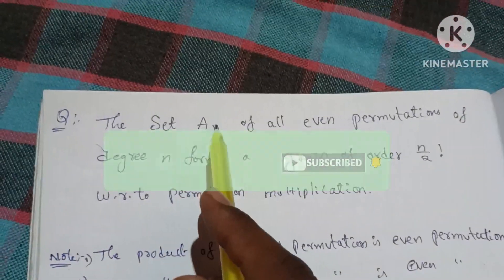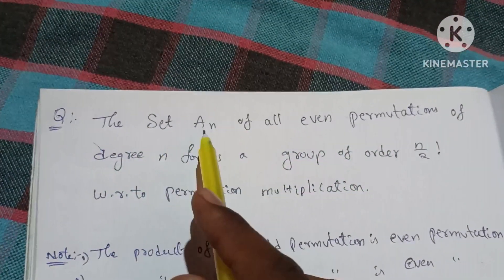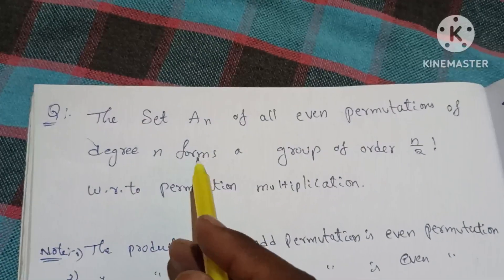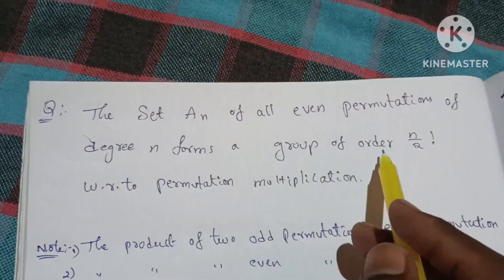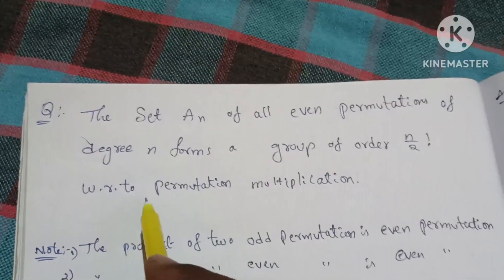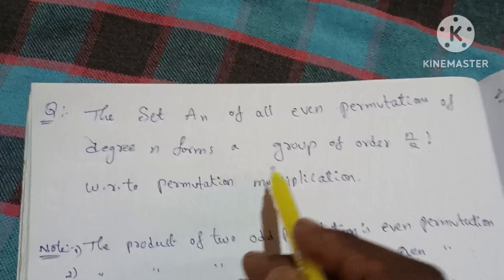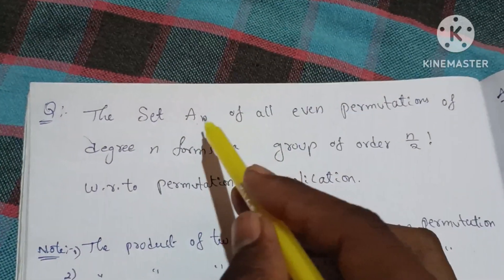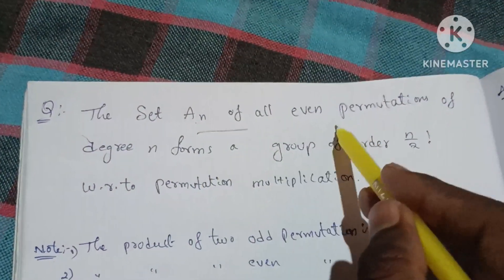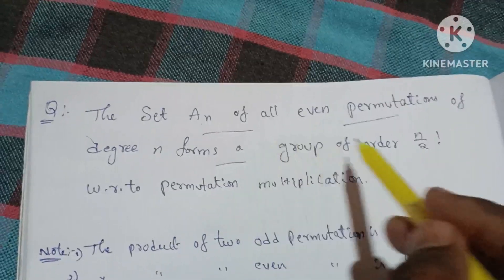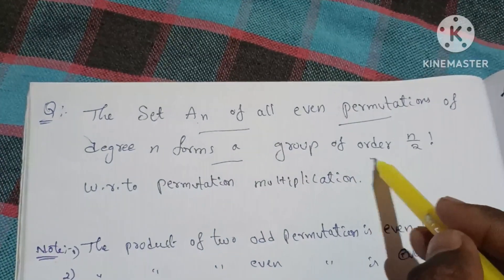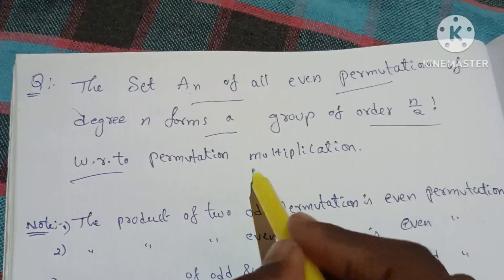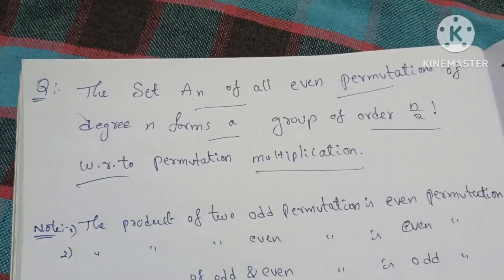The set of all even permutations of degree n forms a group of order n!/2 with respect to permutation multiplication. The set of all even permutations will form a group, and the order n!/2 will come with respect to multiplication.